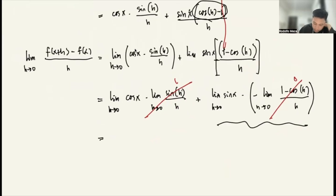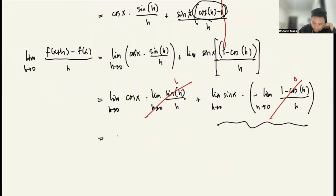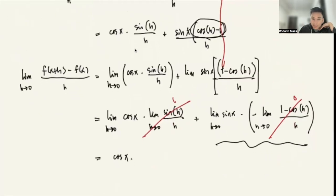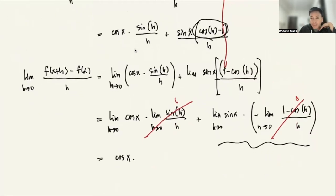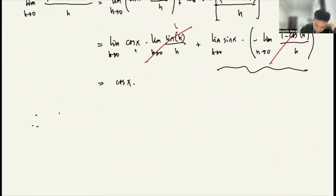What we have left is the limit of cosine x as h approaches 0. Since cosine x is constant with respect to h, the limit of a constant is the constant itself. So this is cosine x. Therefore, if f(x) = sine x, then f'(x) = cosine x.